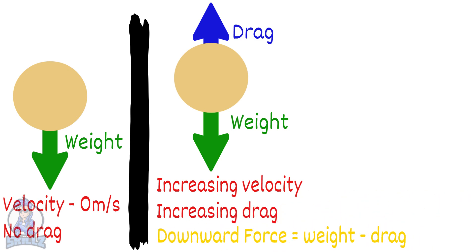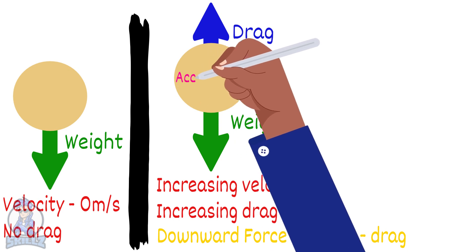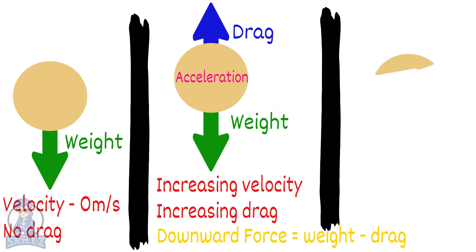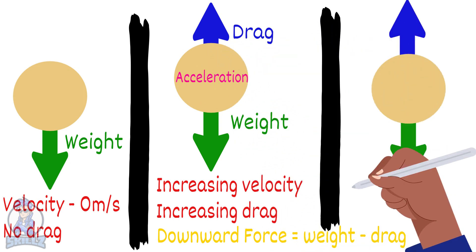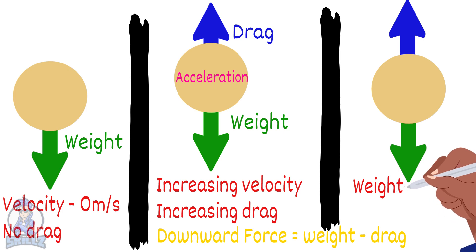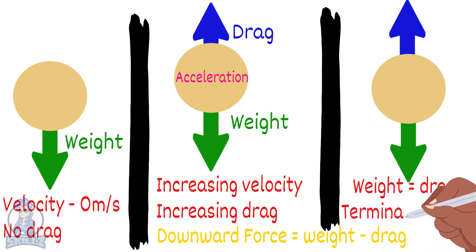At this moment, the ball would be accelerating. In the newer image, the weight and drag forces are equal. There is no unbalanced force so its acceleration would be zero. This means the ball has reached its terminal velocity. It is still falling but does not accelerate.